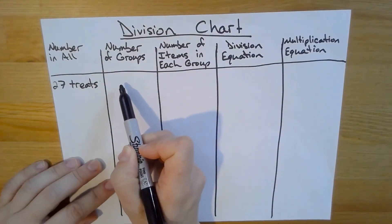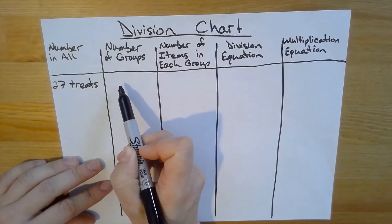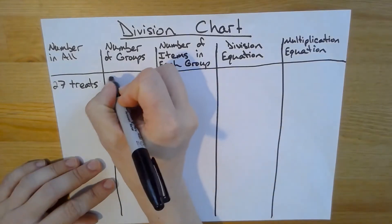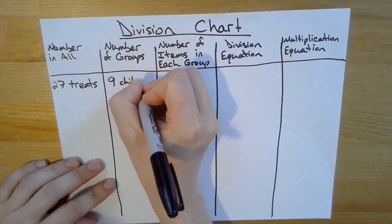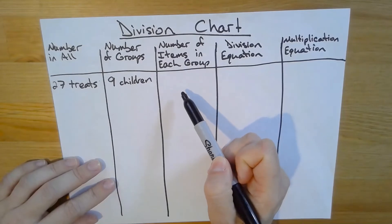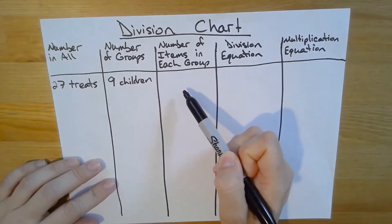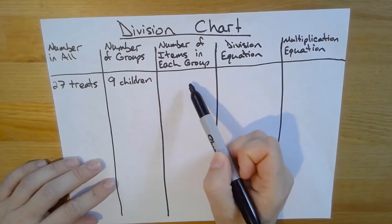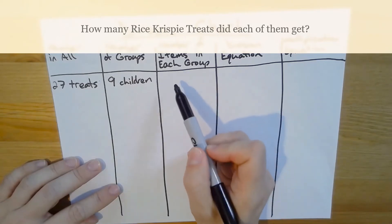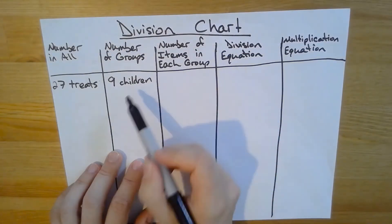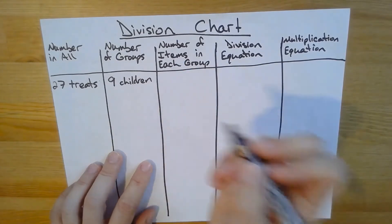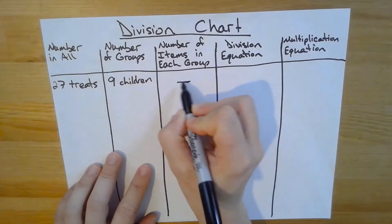Do I know my number of groups? Yes, the problem tells me there are nine children all together, so that means I have nine groups who will be getting the Rice Krispie Treats. I'll put nine children. Number of items in each group — do I know that yet? I think that is what my problem is asking me to solve for. Let me reread the question again: how many Rice Krispie Treats did each of them get? Yes, it seems the problem is asking me how many Rice Krispie Treats each child got, which is the same as the number of items in each group. So since I don't know that yet, I'm just going to note a blank spot since this is what I'm solving for.